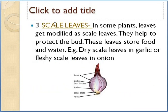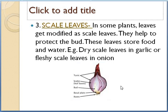The last type of modification is scale leaves. In some plants, leaves get modified as scale leaves. They help to protect the bud, and these leaves also store food and water. Example: dry scale leaves in garlic or fleshy scale leaves in onion. If you cut an onion from the center, the layers you can remove one by one are actually leaves called scale leaves. Their main function is to protect a bud in the center.